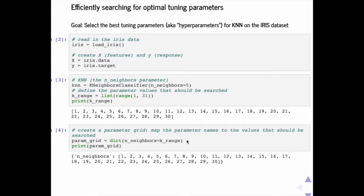After that, what we are doing is to create a parameter grid. And the dictionary is just like n_neighbors.